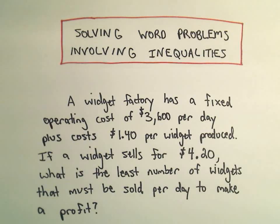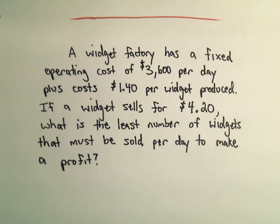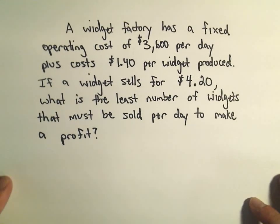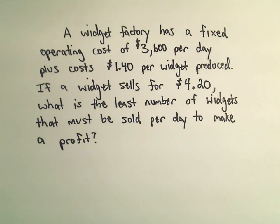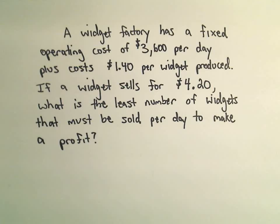In this video I'm going to do an example of a word problem involving inequalities. Suppose we've got a widget factory — whatever a widget is — but suppose a factory is making something and they've got a fixed operating cost of $3,600 a day, plus it costs $1.40 for them to make a widget. Suppose they can sell these things for $4.20 each, and we want to know what's the least number of widgets they must sell a day in order to make a profit.